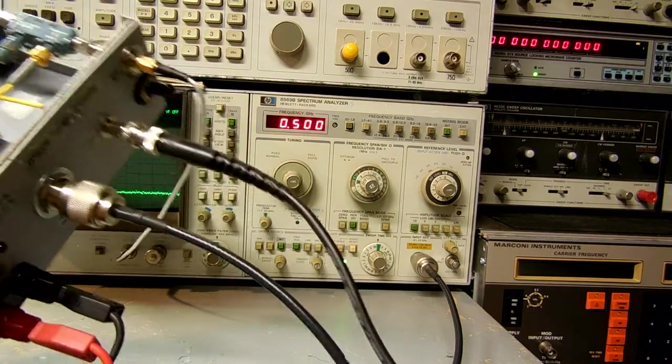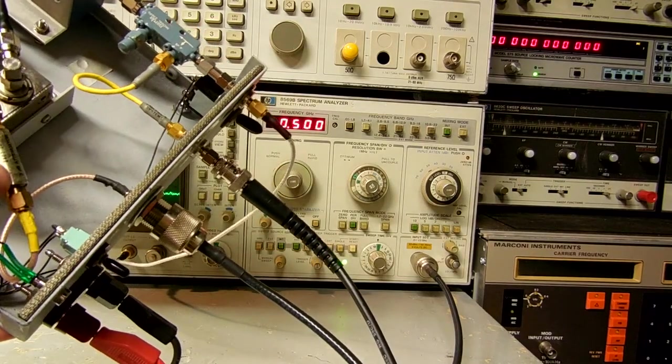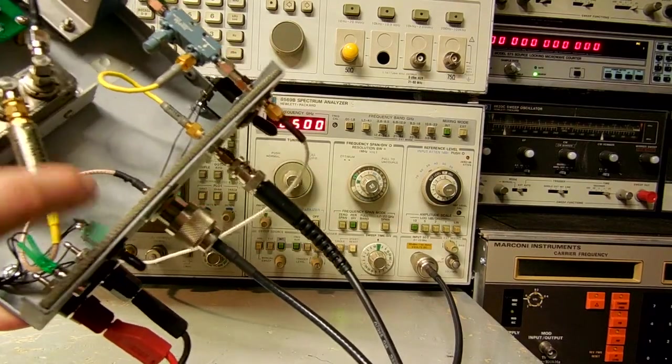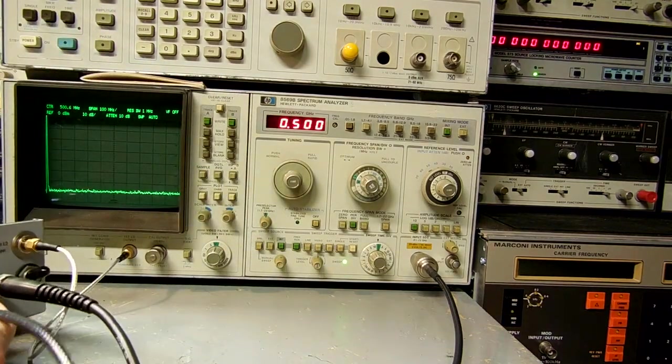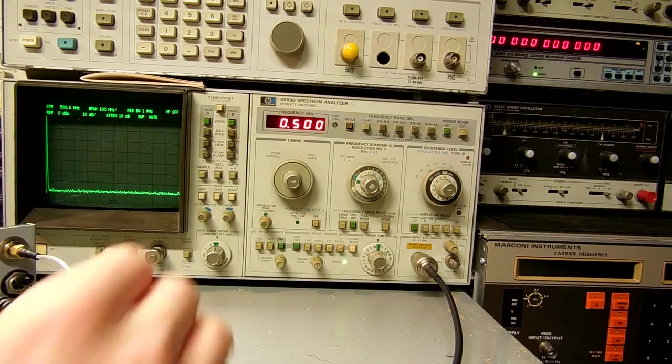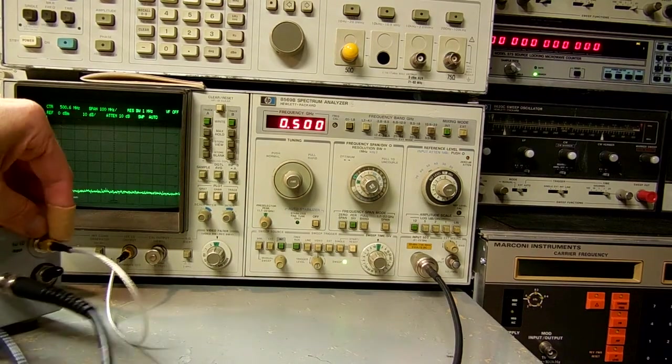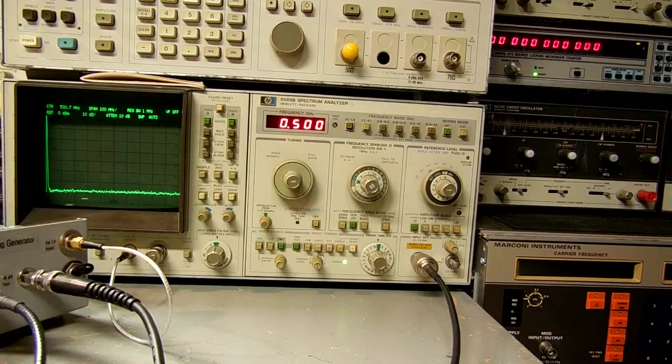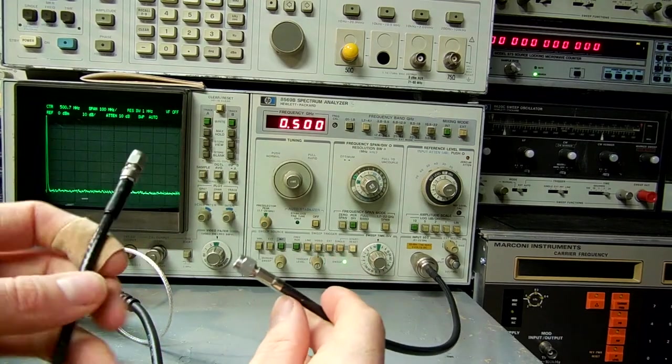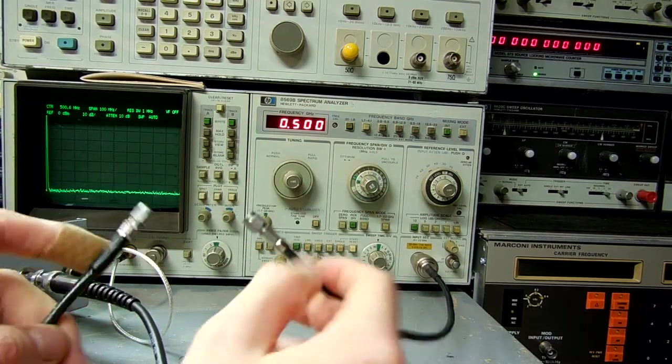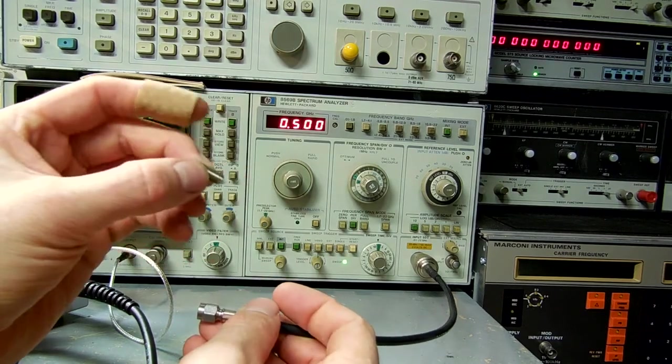All the output of the tracking generator is the IF output to the 3 dB attenuator and then the switch to the front panel end jack. And you can see this is the local oscillator output from the spectral analyzer to local oscillator input right here. And this cable here is the RF input to the spectral analyzer. This is our tracking generator output, spectral analyzer input.